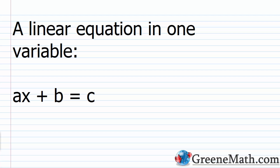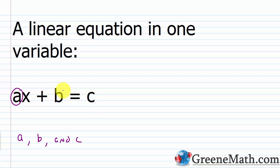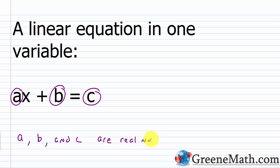A linear equation in one variable looks like this: Ax plus B equals C. So if you're in a textbook following along, you'll see something like this. This is a generic form. A, B, and C are just representing real numbers — this value, this value, and this value. So we'll say A, B, and C are real numbers.